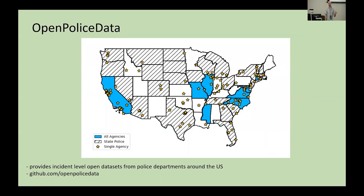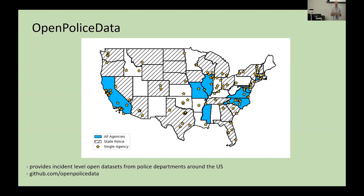A friend of mine, who actually gave a presentation on this topic yesterday, created a Python library called Open Police Data. This data is basically an aggregator of police data from various cities around the country. There should be more stars on the map than you see here, but basically police departments are releasing some data for the public to consume — a lot of it is incident-level data: traffic stops and things like that. I was able to get data from police departments for most major cities and towns around Virginia.